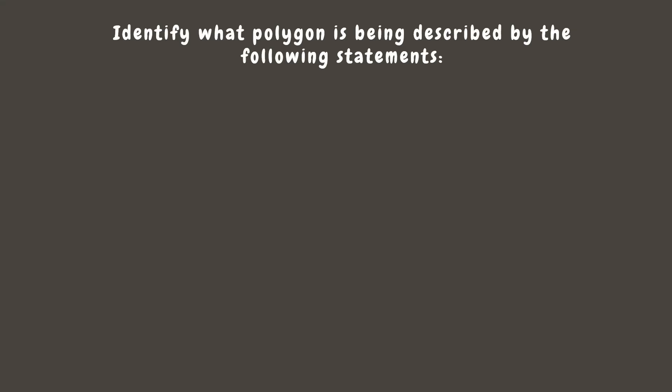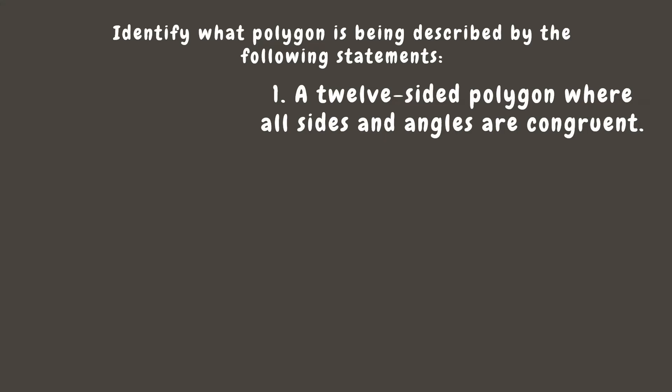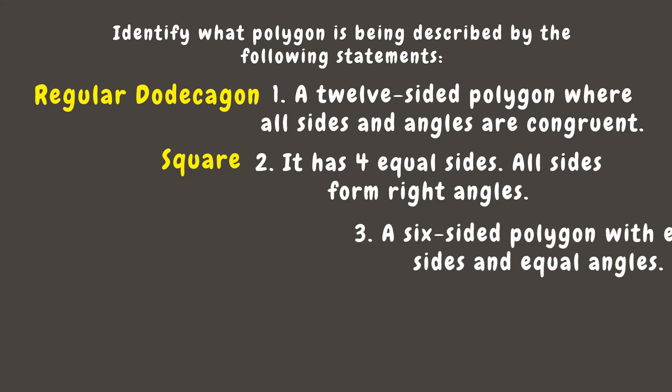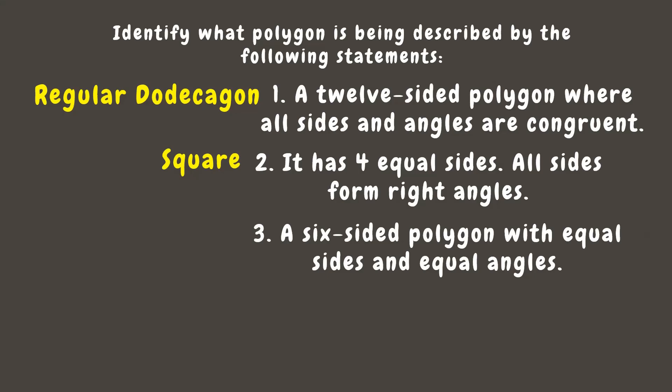Now let's identify what polygon is described by each statement. First: a 12-sided polygon where all sides and angles are congruent — since a 12-sided polygon is a dodecagon, this is called a regular dodecagon. Next: it has four equal sides where all sides form right angles — a polygon with four equal sides and four right angles is a square. Remember, there is no such thing as a 'regular square' since all squares are regular polygons.